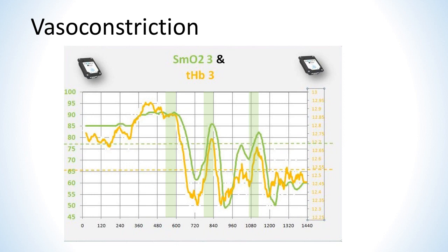This slide shows SMO2 and THB in the deltoid muscle of a cyclist performing three Wingate tests in a row. The deltoid is considered a non-involved muscle since it is not a primary working muscle for cycling. The green shaded areas indicate where the three all-out loads were performed. Looking at the change in THB from the start to the end of these tests, the body constricted blood flow in the deltoid as a means to redirect it elsewhere, shown by the decrease in THB and supported by the decrease in SMO2 as well.